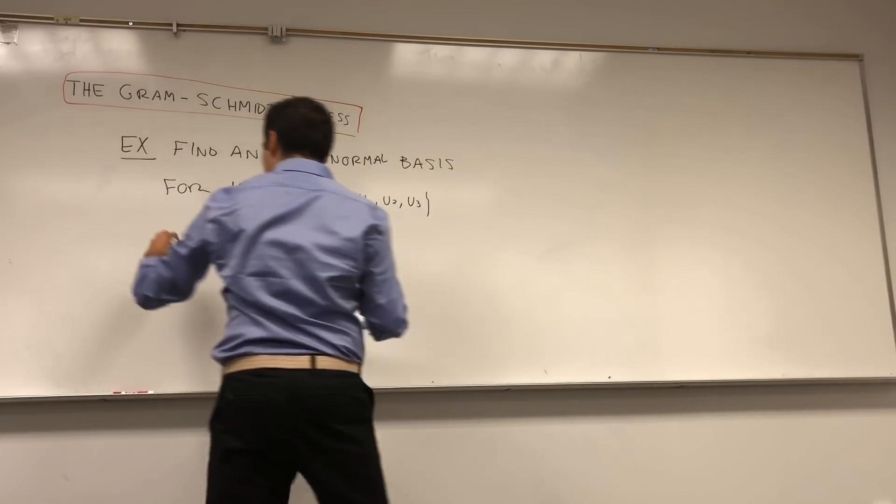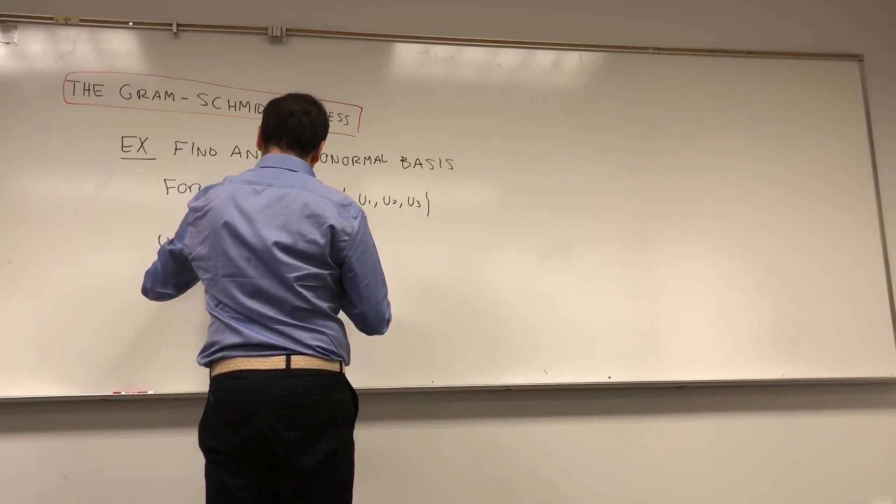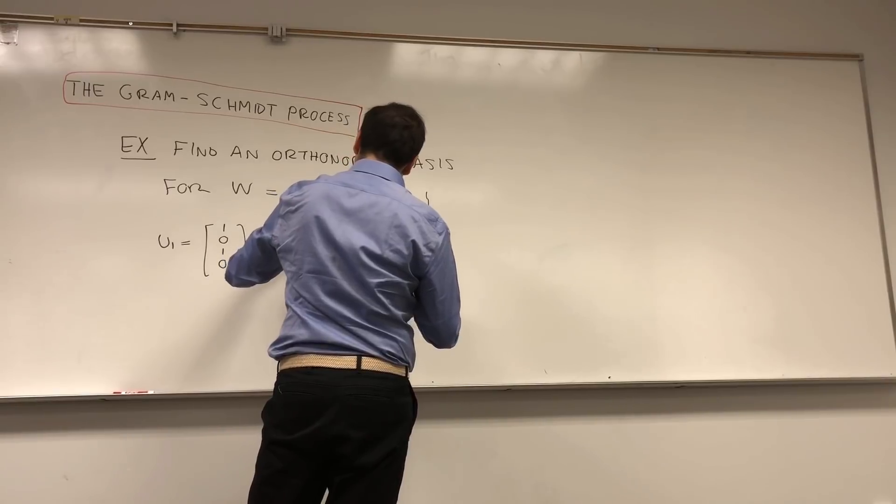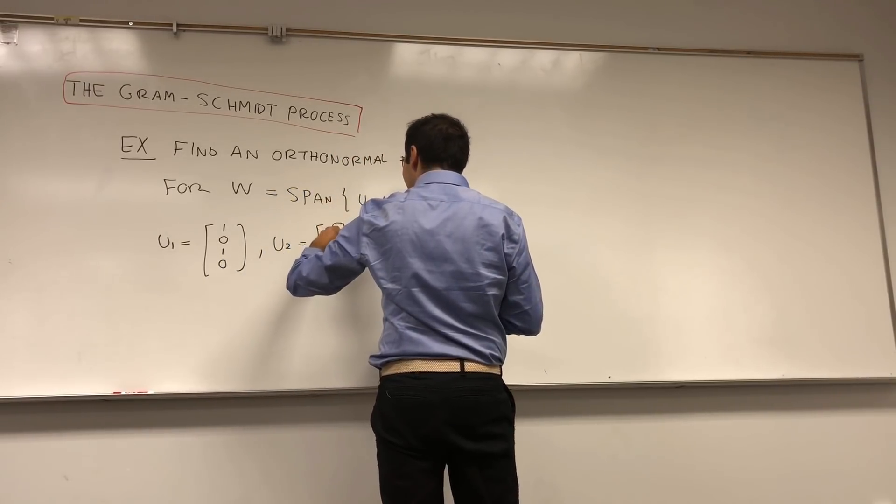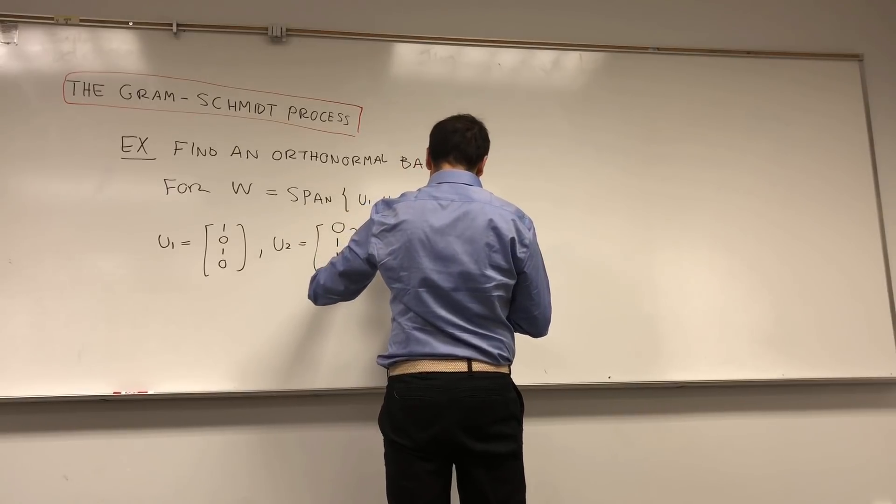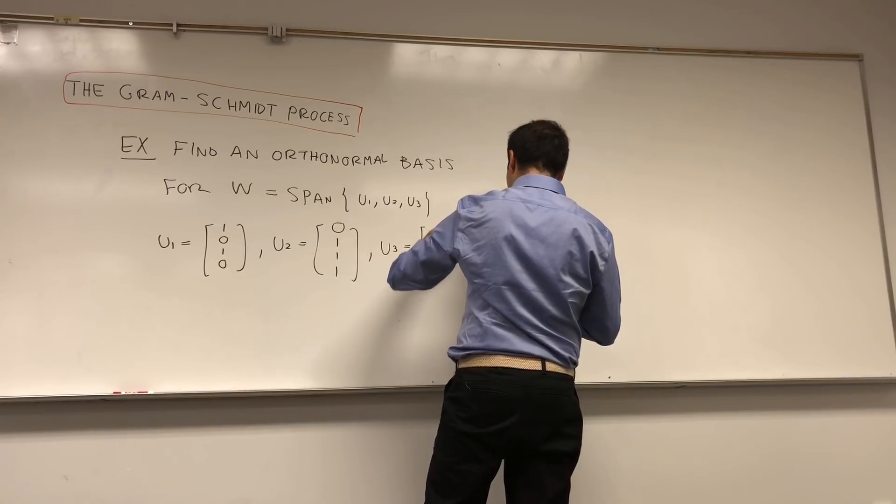And the cool thing is, it just takes ideas from the previous video about orthogonal projections. So let's do a concrete example. Find an orthonormal basis for the following set W, which is the span of the following three vectors: U1, U2, U3, where U1 is 1, 0, 1, 0, U2 is 0, 1, 1, 1, and U3 is minus 1, 0, 0, 1.